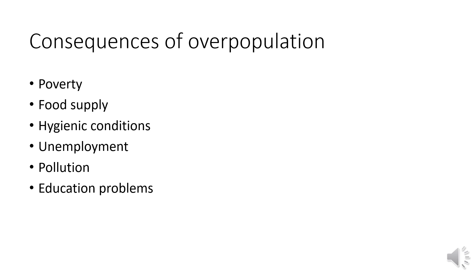Further consequences include unemployment — more people means more jobs are needed, and if sufficient jobs are not available it leads to unemployment. There are added problems of pollution, as resources are taken from the environment in excess. Education becomes difficult for the government to provide to all. Housing problems arise as more people require more houses, which cannot be built fast enough. All these problems are due to overpopulation.